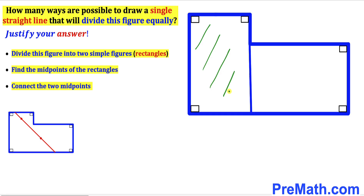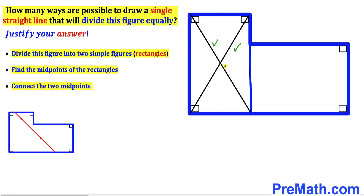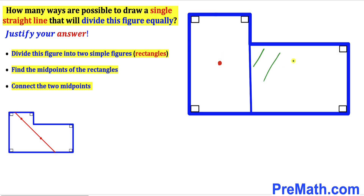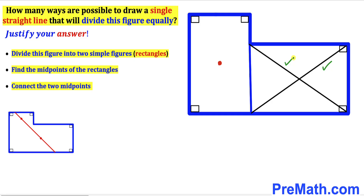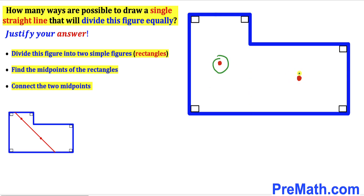Our next step is to find the midpoints of each of these rectangles. For the first rectangle, we draw the diagonals and they intersect at a point — that is our midpoint. For the second rectangle, we draw its two diagonals and they intersect at another point — that is our second midpoint.